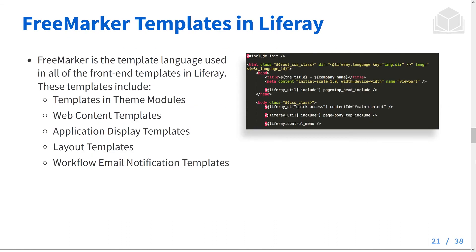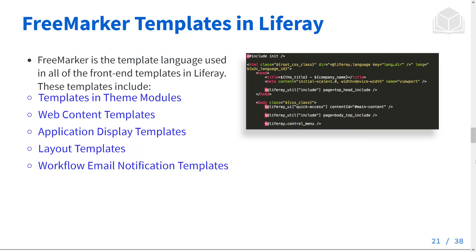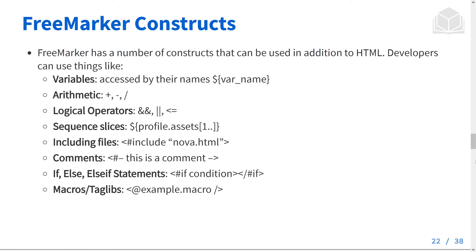Freemarker is the template language used in all of the front-end templates in Liferay. These templates include templates and theme modules, web content templates, application display templates, layout templates, and workflow email notification templates. Within Freemarker, you can use HTML just like any other HTML file. But Freemarker provides a number of other useful constructs, like variables, arithmetic, logical operators where you can check both and/or, sequence slices, you can include other Freemarker files, comments, if-else and else-if statements, as well as macros and taglibs.